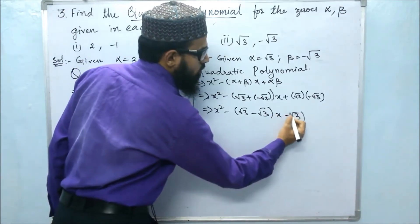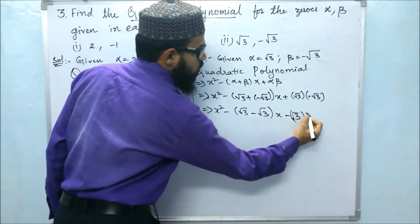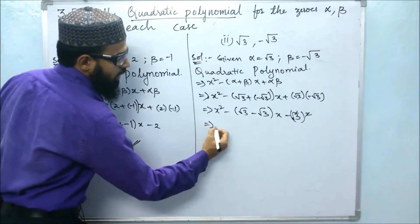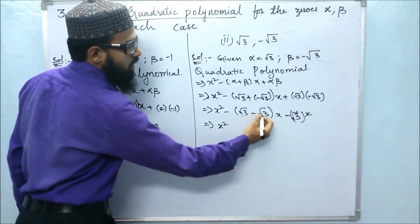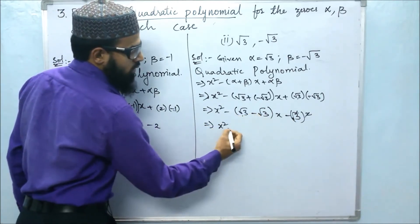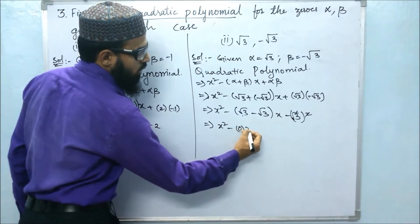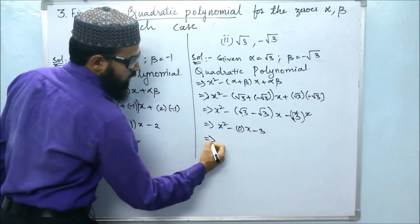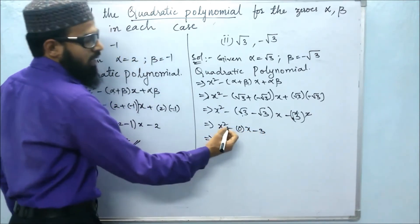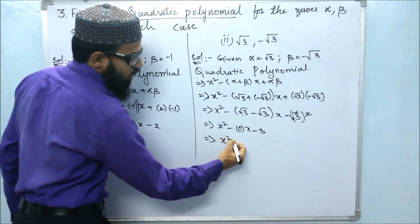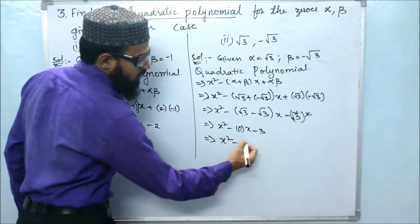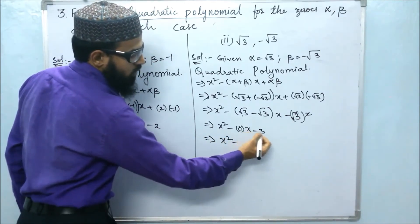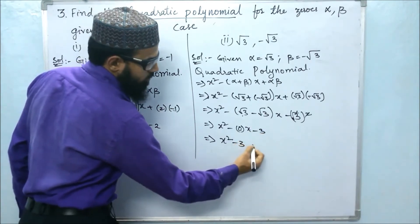We can write root 3 whole squared — the square root gets cancelled, giving 3. Since root 3 minus root 3 is 0, we have 0 into x. So 0 into x minus 3. Therefore, the required quadratic polynomial is x squared minus 3. The zero coefficient term we do not write, so it is just x squared minus 3.